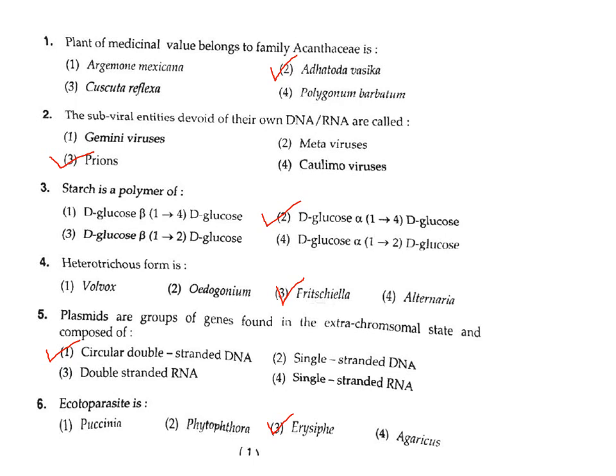Plasmids are extra-chromosomal genetic elements — meaning they are found outside the chromosome. The correct answer is Option 1.